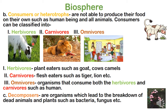Consumers get their food from plants, directly or indirectly. Consumers can be classified into herbivores, carnivores, and omnivores. Herbivores are plant-eating animals — like goat, cow, camel. They directly eat the producer. Carnivores — like lions — eat flesh. They are indirectly dependent on producers because they eat plant-eating animals.